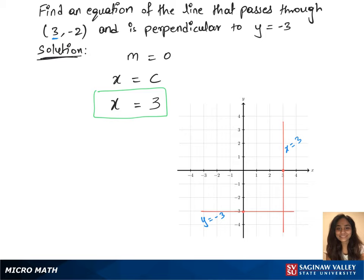Here we have y equals negative 3 and x equals 3 shown on the graph.